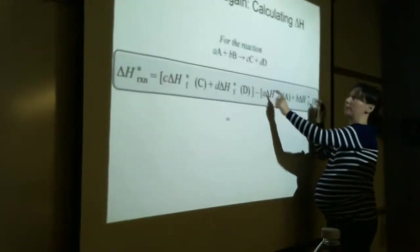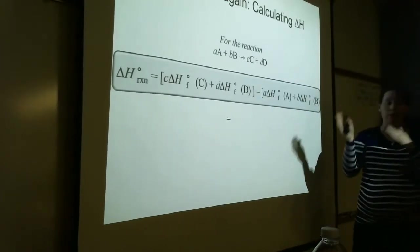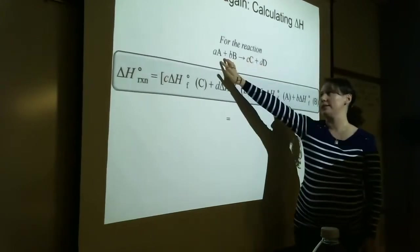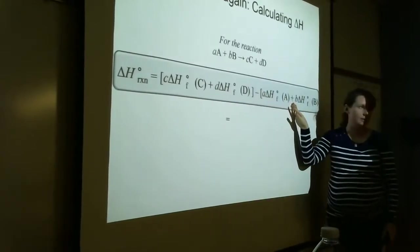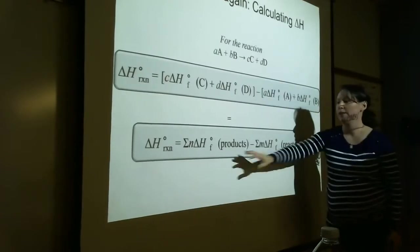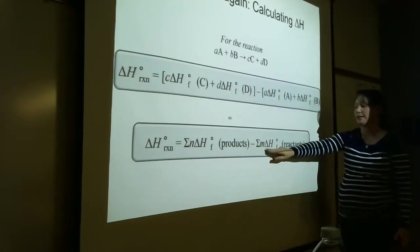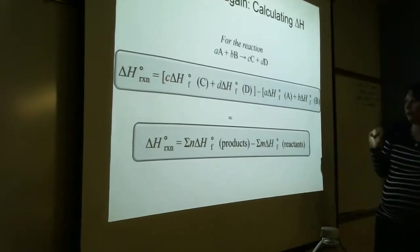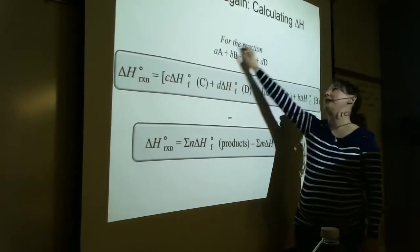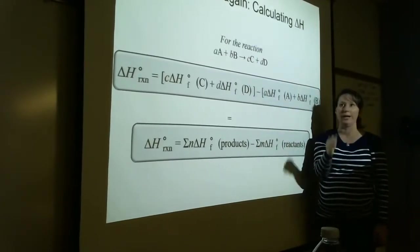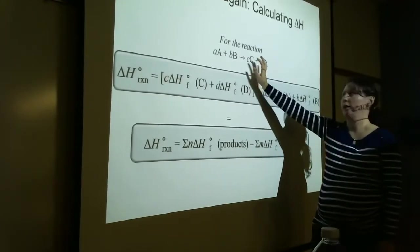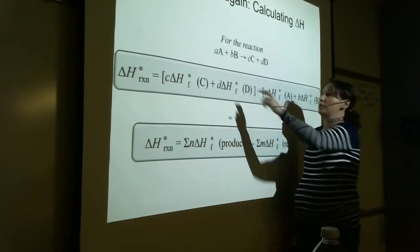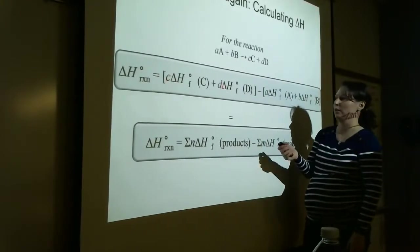Remember delta always means change in, and delta is always final minus initial. In a chemical reaction, products are the final state and reactants are the initial state — that's why it's products minus reactants. In summation notation, it's the sum of the heats of formations times their coefficients for the products, minus the sum of the heats of formations of the reactants times their coefficients. Also, don't forget to make sure your equation is balanced before you do this, because these coefficients play into the calculation.